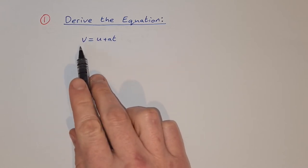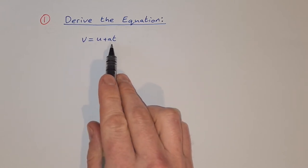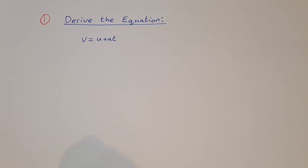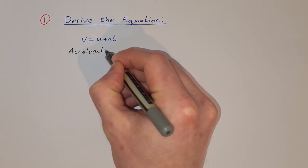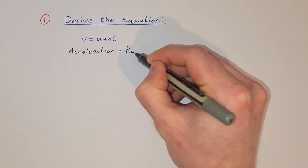So we're asked to derive the equation v is equal to u plus a t. So to derive this one, we start with the fact that acceleration is equal to the rate of change of velocity.